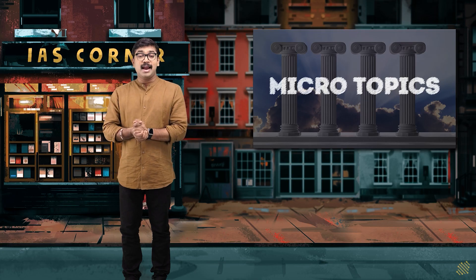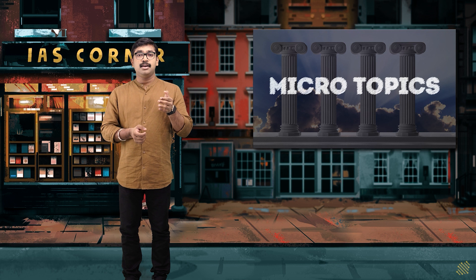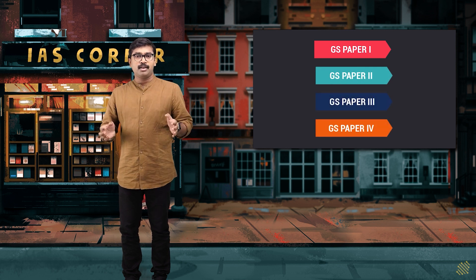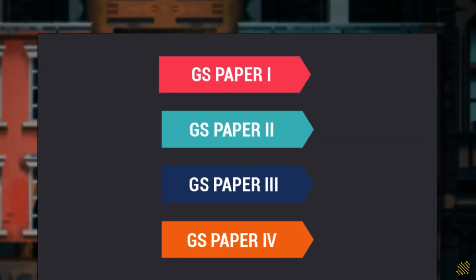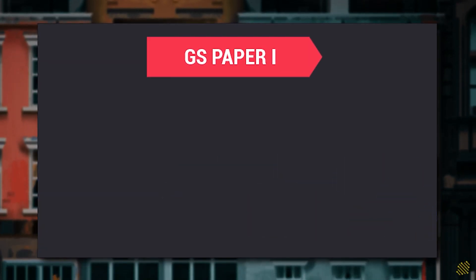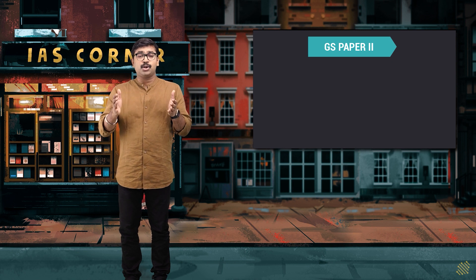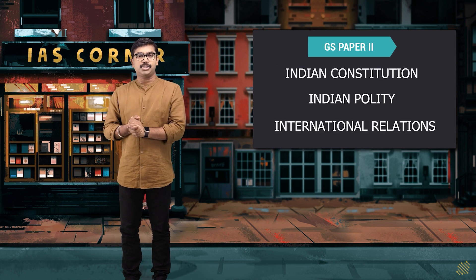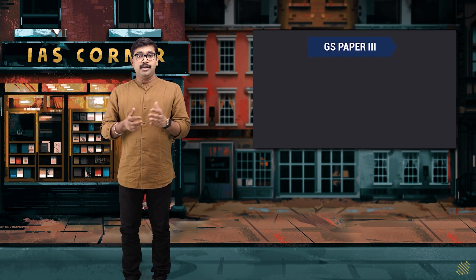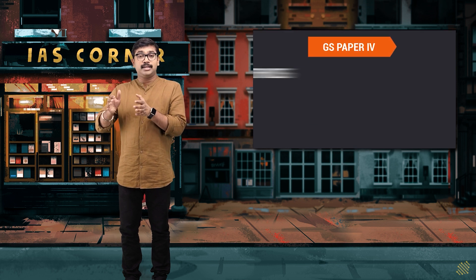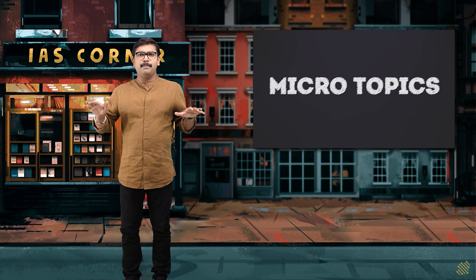By this time, I'm assuming that you already read the main syllabus and you have an idea that there are different papers like GS Paper 1, GS Paper 2, GS Paper 3, and GS Paper 4. You know the basic pillars — when I say GS Paper 1, history, Indian culture, geography, and society come to mind. When I talk about GS Paper 2, Indian constitution, Indian polity, and international relations. GS Paper 3 covers economy, environment, science and technology.